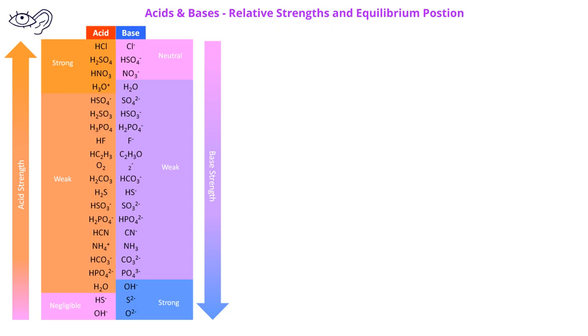If we have a table such as this given to us, we can use this table to predict the direction an acid-base equilibrium reaction will be favored. The position of the equilibrium in a hydrogen ion transfer reaction is governed by the relative abilities of the two bases to accept the hydrogen ion.